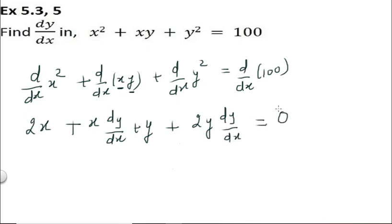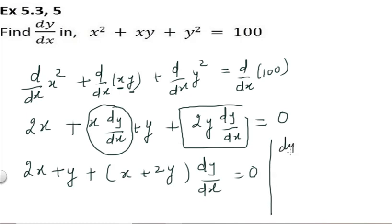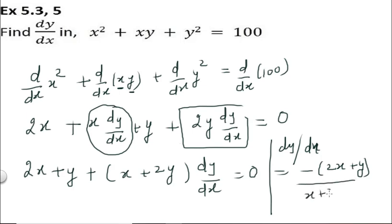Setting this equal to 0, we combine terms: 2x + y + (x + 2y)·dy/dx = 0. Taking dy/dx common: dy/dx(x + 2y) = −(2x + y). Therefore dy/dx = −(2x + y) / (x + 2y).